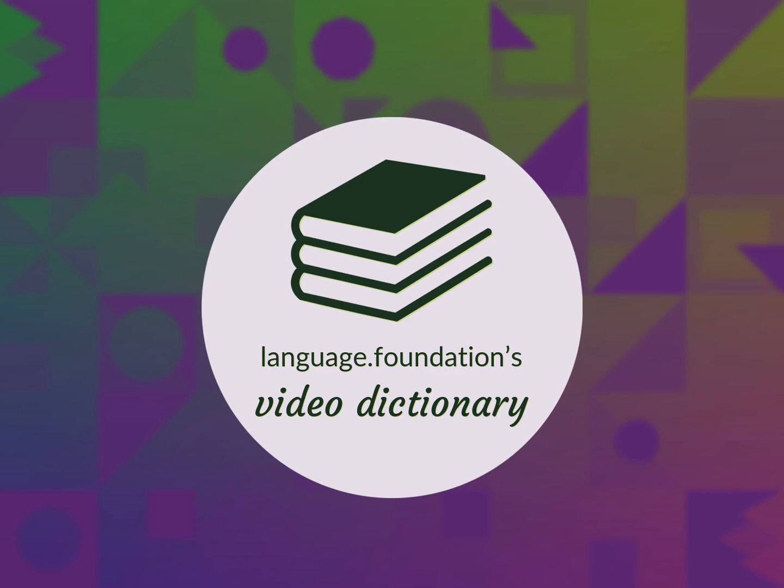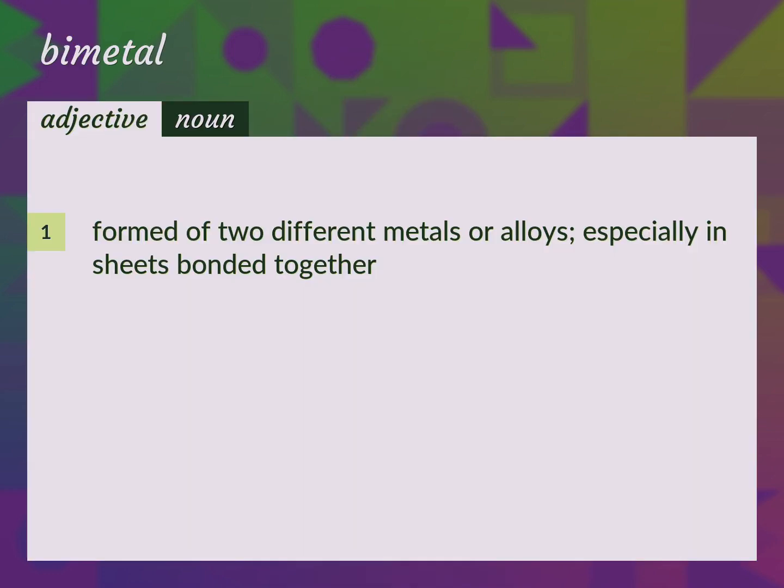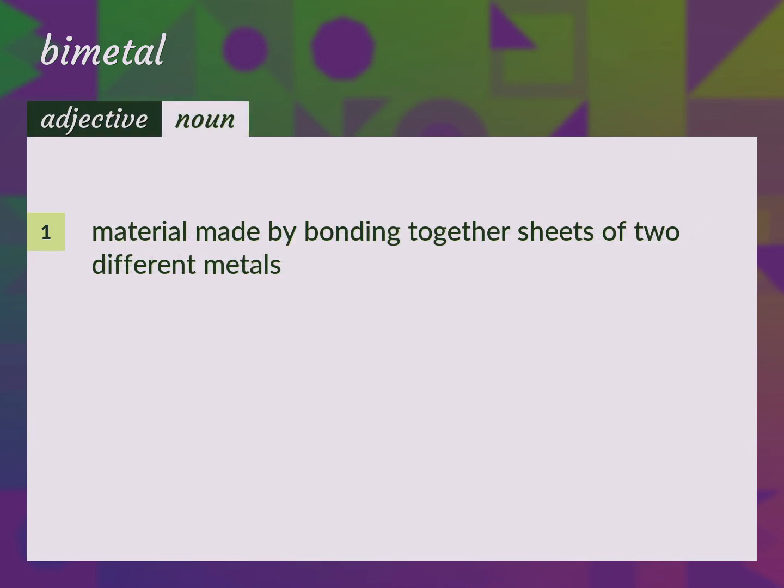Language.Foundation's Video Dictionary, helping you achieve understanding. Bimetallic: formed of two different metals or alloys, especially in sheets bonded together. Material made by bonding together sheets of two different metals.